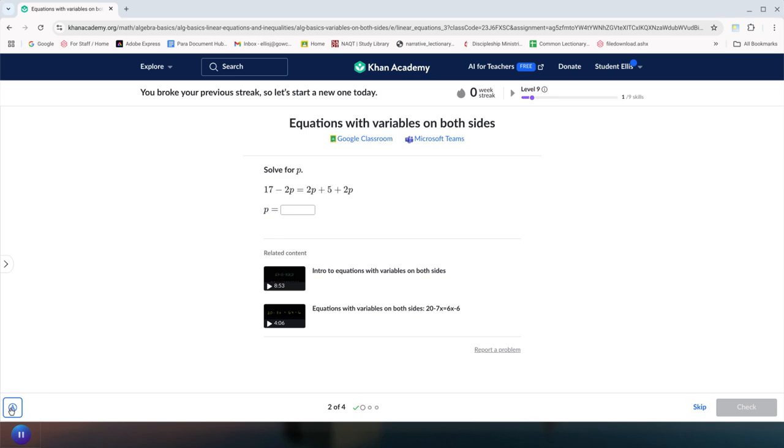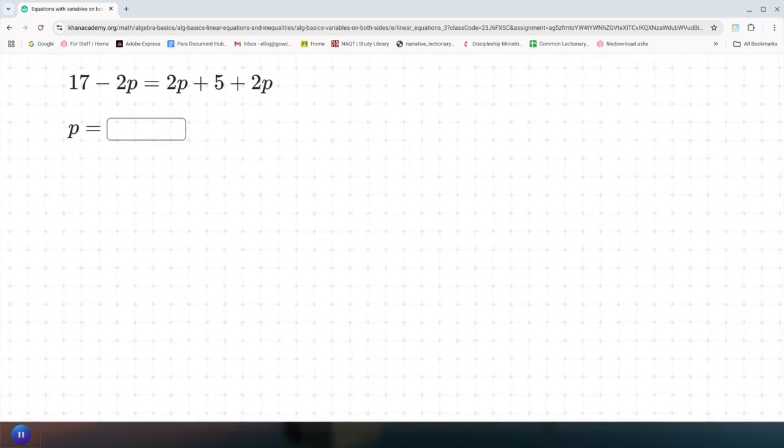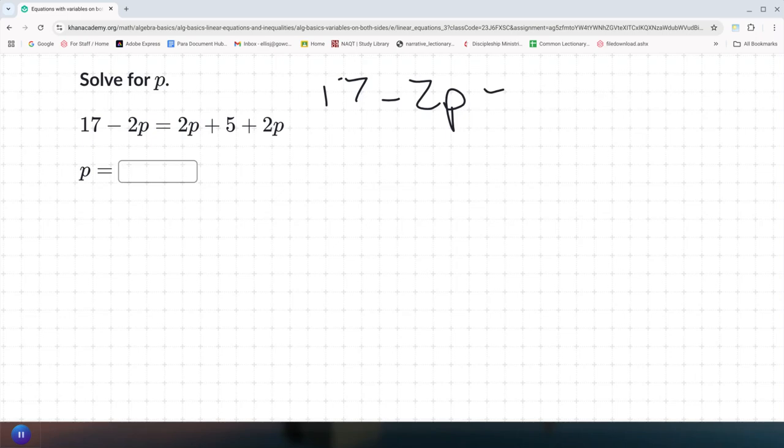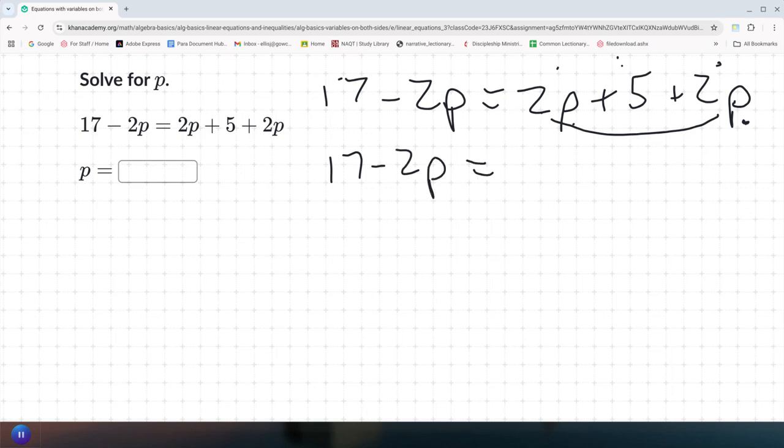All right, next question. This one's a little bit trickier because I see about five things up here. So we've got 17 minus 2p equals 2p plus 5 plus 2p. All right, so on the right-hand side I see 1, 2, 3 things, which means we can combine some of them. So which ones have the letters? That's right, it's this one, the p, and this one, the p. So we can combine these together. Everything else we drop. 17 minus 2p equals these two get combined. 2 plus 2 is 4, 4p, and the 5 gets dropped.